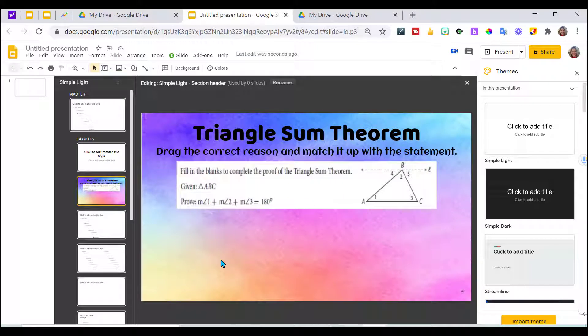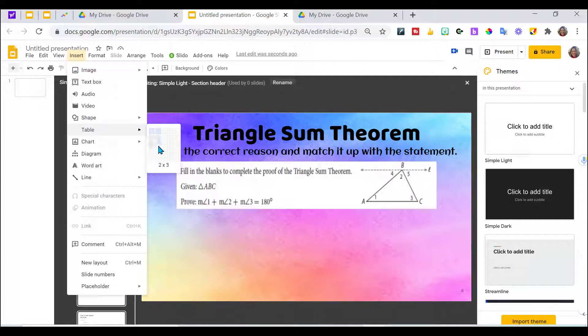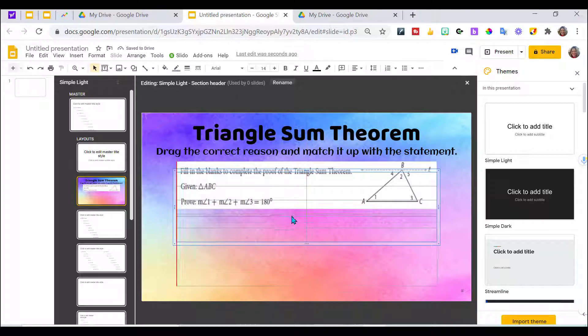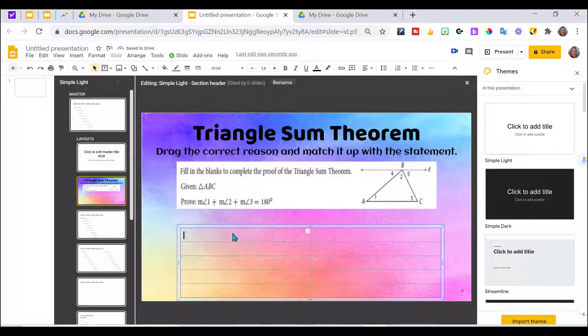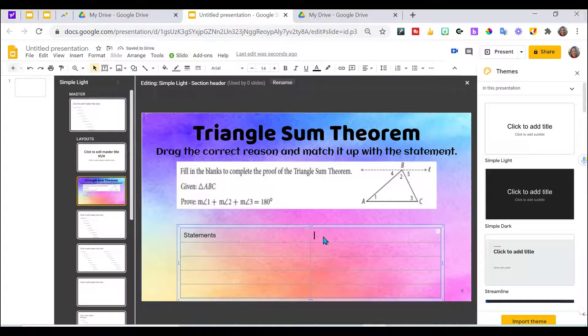So now I need to create the two column proof. So I'm going to insert, go to table and I need two by five, drag this down into place. The first one, this is going to be called statements. And over here, I have reasons highlight statements.